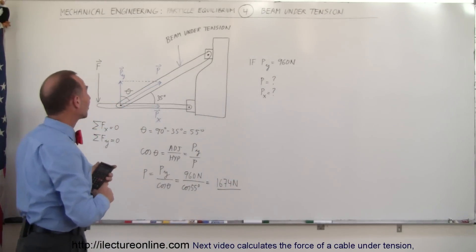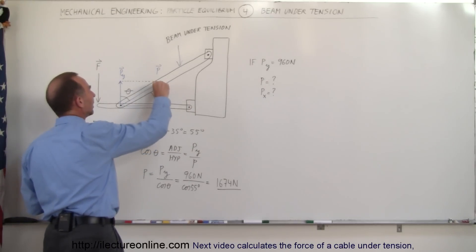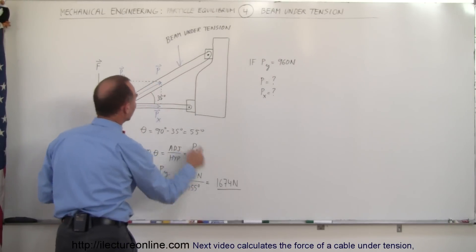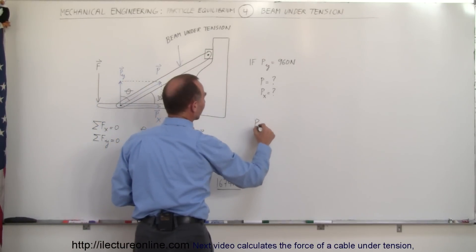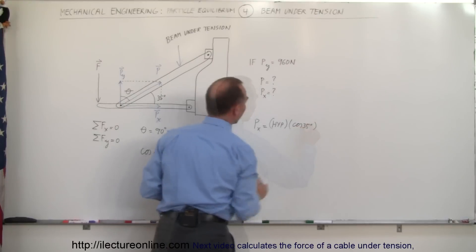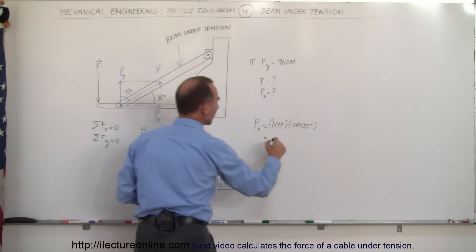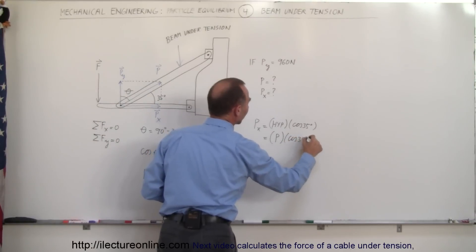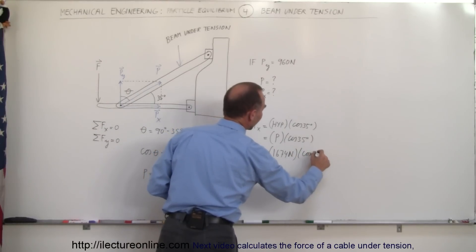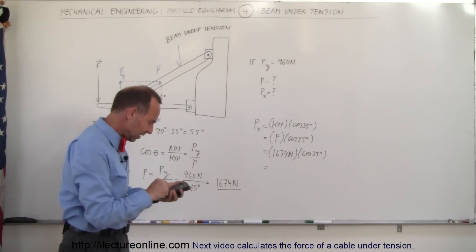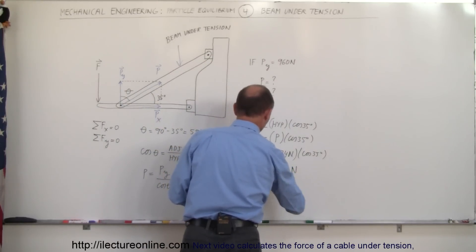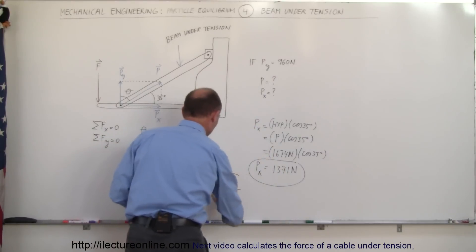Now we want to find the x component, which is this component right here. So we can take this triangle. In here we have the angle of 35 degrees, we have the hypotenuse which we now know, and we're looking for P sub x. We can say that P sub x equals the hypotenuse times the cosine of 35 degrees. P was equal to 1,674 newtons. We multiply that times the cosine of 35 degrees and we have 1,371 newtons. That would be the component in the x direction and this would be the total force.